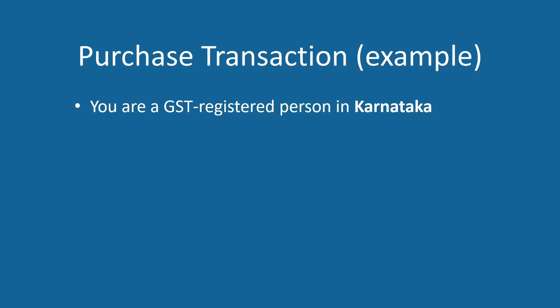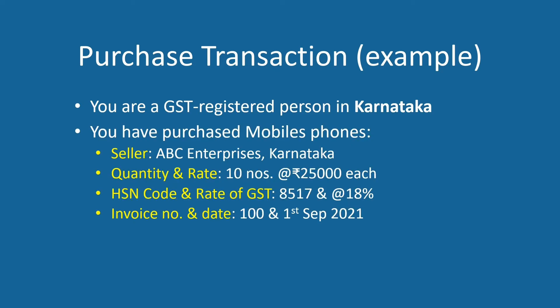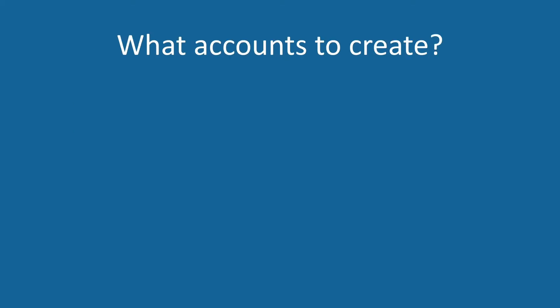Let's say you are in Karnataka and you have purchased mobile phones from ABC Enterprises, who is also in Karnataka. Other details like quantity, rate, HSN code, rate of GST, invoice number, etc. are given on the screen. Today we will create a purchase voucher for this transaction. But before that, let's create and configure certain accounts. This is a one-time work, so we don't have to repeat it every time.